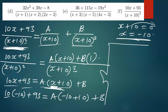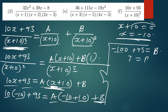Multiplying: 10 times negative 10 gives negative 100, so negative 100 plus 93 equals negative 7. On the right side, negative 10 plus 10 equals zero, so A drops out and we remain with B. Therefore B equals negative 7 — thank you for that correction, yes it is negative 7.